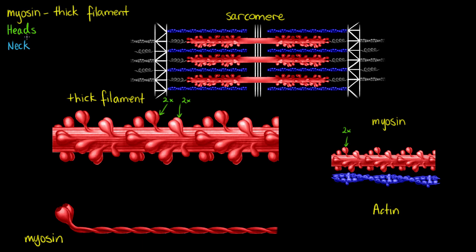The next area is the neck. If we have two heads we're also going to have two necks per myosin as well. On each neck of those myosin molecules we have two wrapped polypeptides that we refer to as the light chains. The long neck region of myosin is going to help by acting as a lever during contraction and cross-bridge formation, and we'll have two polypeptide light chains wrapped around each of those necks.